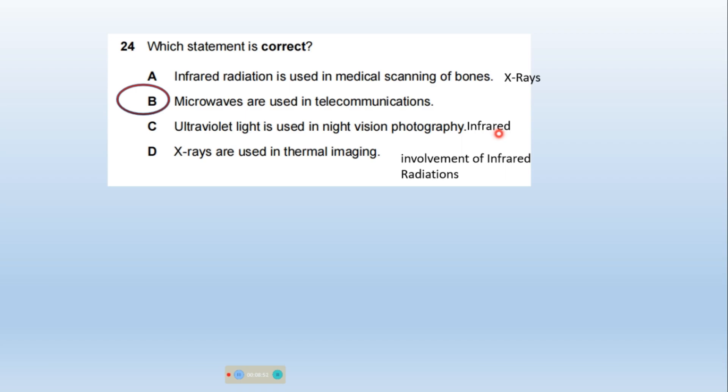Infrared radiation is used in night vision photography. X-rays are used in thermal imaging. Involvement of infrared radiation is in thermal imaging. So option B is the correct one.